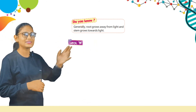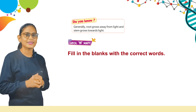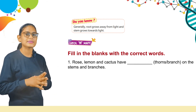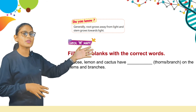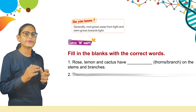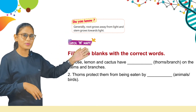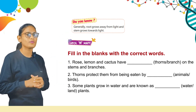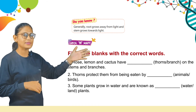Now we have another check and meet. Fill in the blanks with correct words. Rose, lemon, and cactus have thorns on the stem and branches. Thorns protect them from being eaten by animals. Some plants grow in water and are known as water plants.